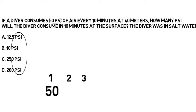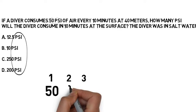Now let's pause and think about step two — do we multiply or do we divide? We're consuming a certain amount of air at depth, and then going up to the surface. Will we breathe through more air at the surface than at depth, or less? Hopefully you're thinking: when I go up, I'm going to breathe less air than at depth, so I need to make 50 PSI smaller.